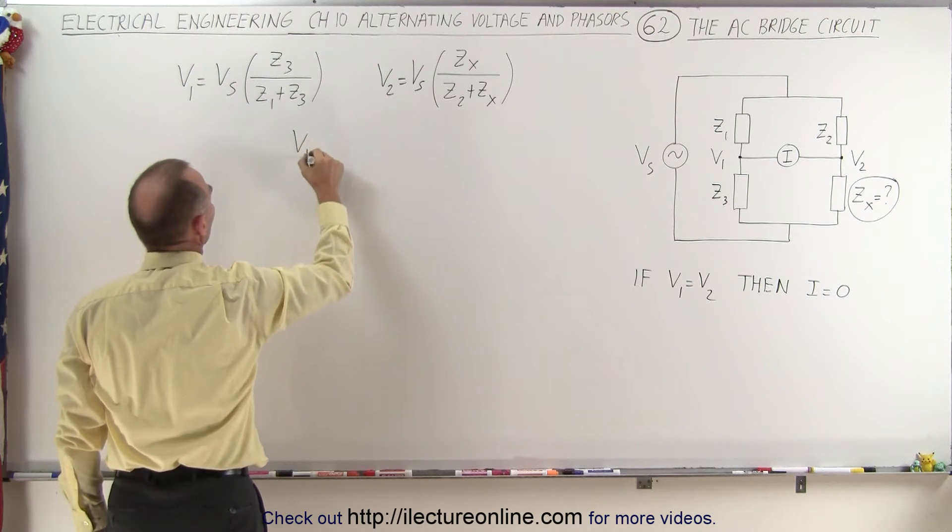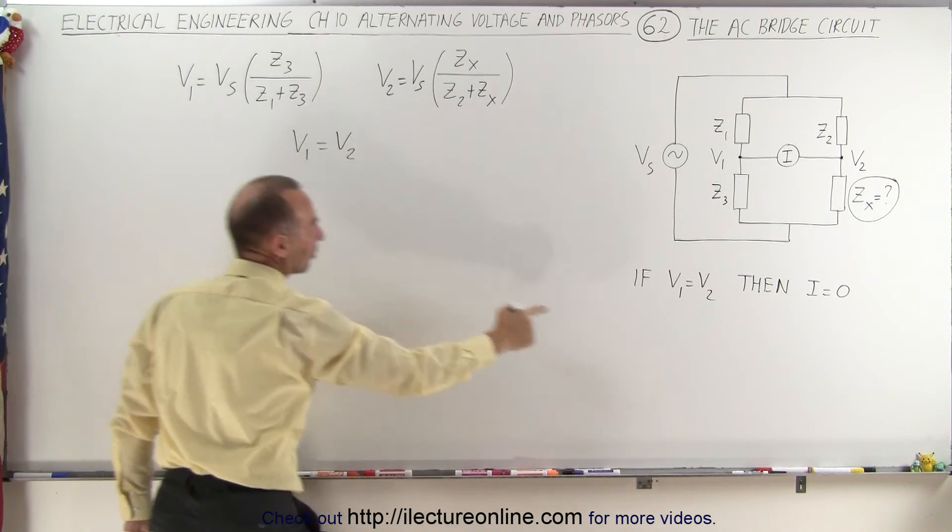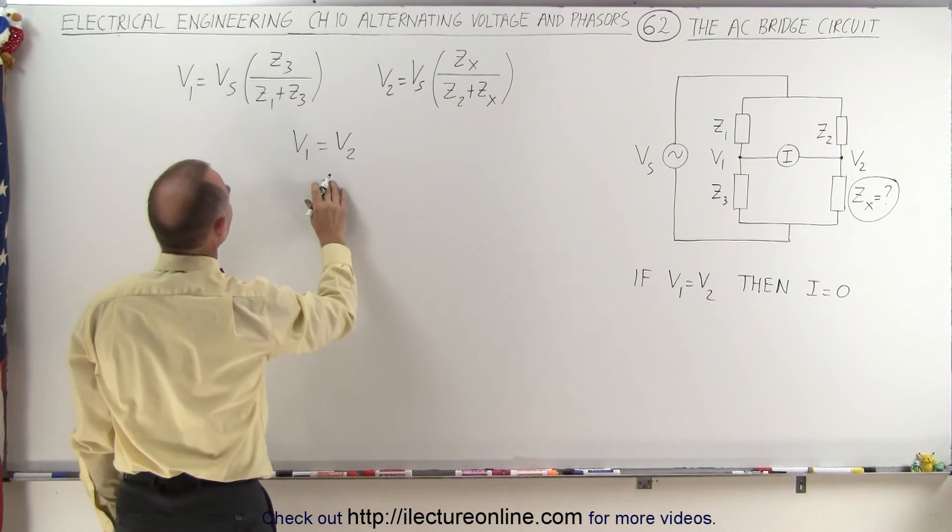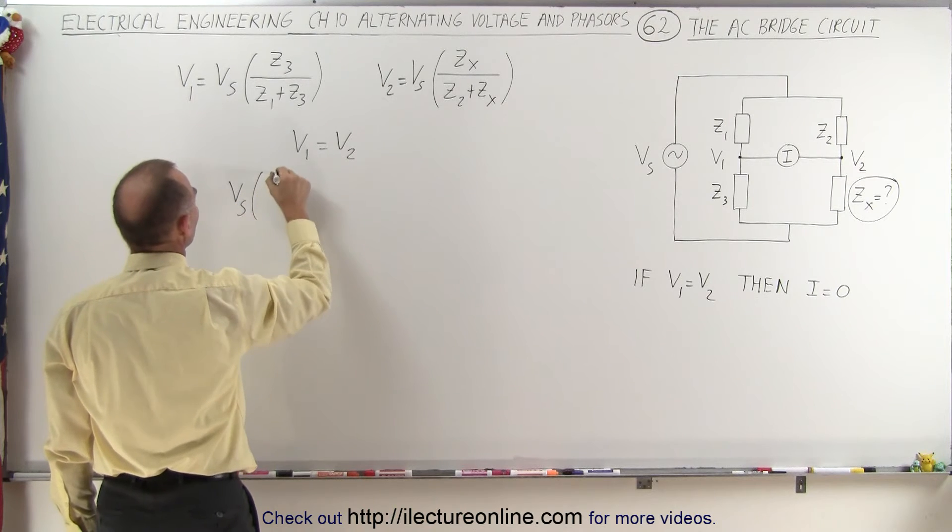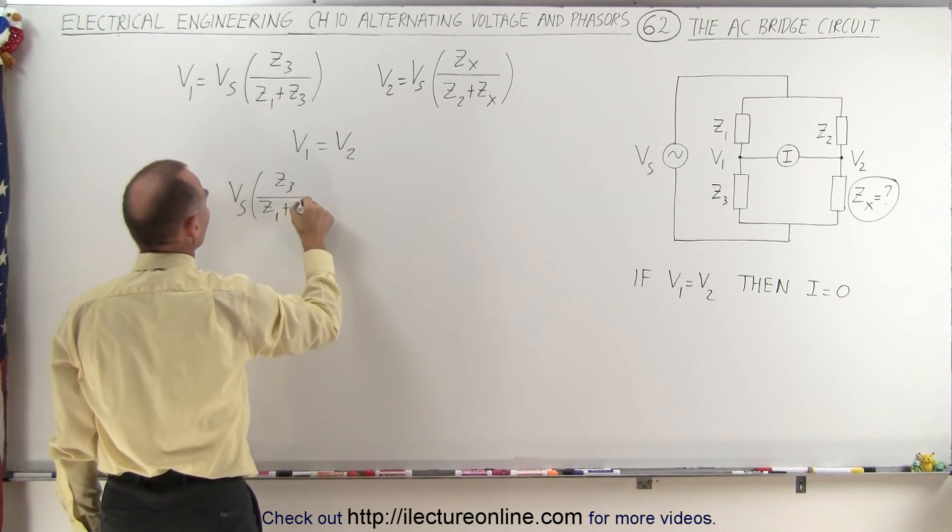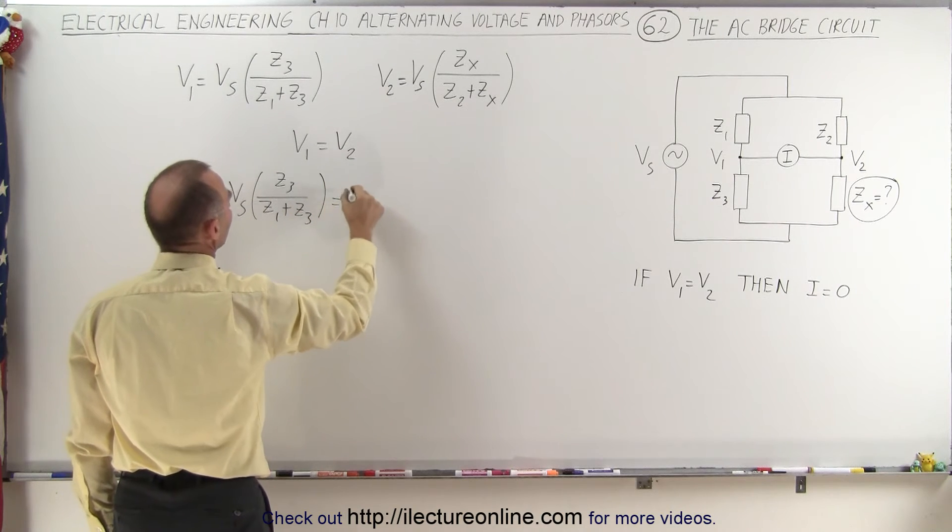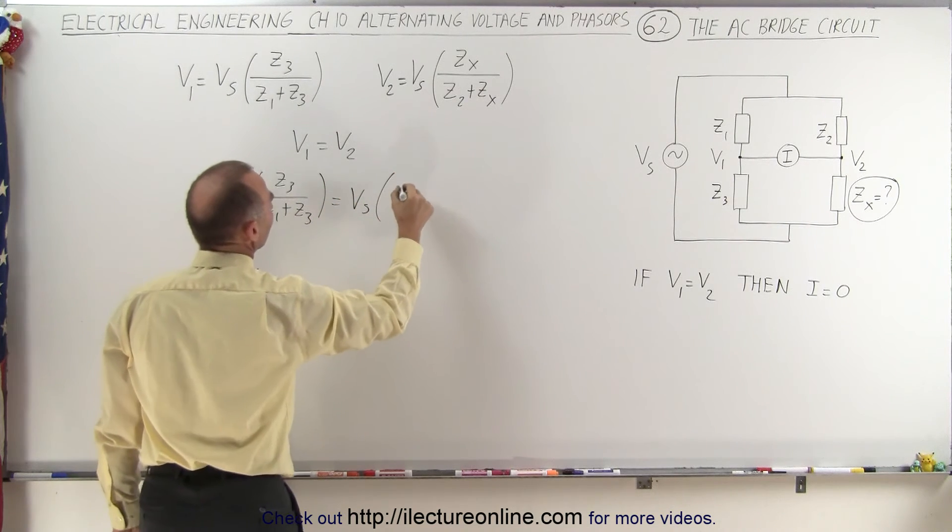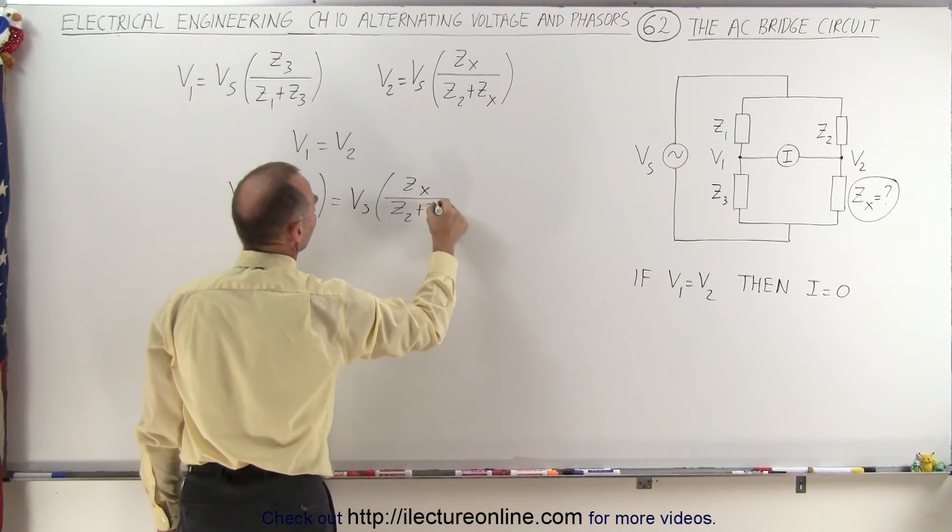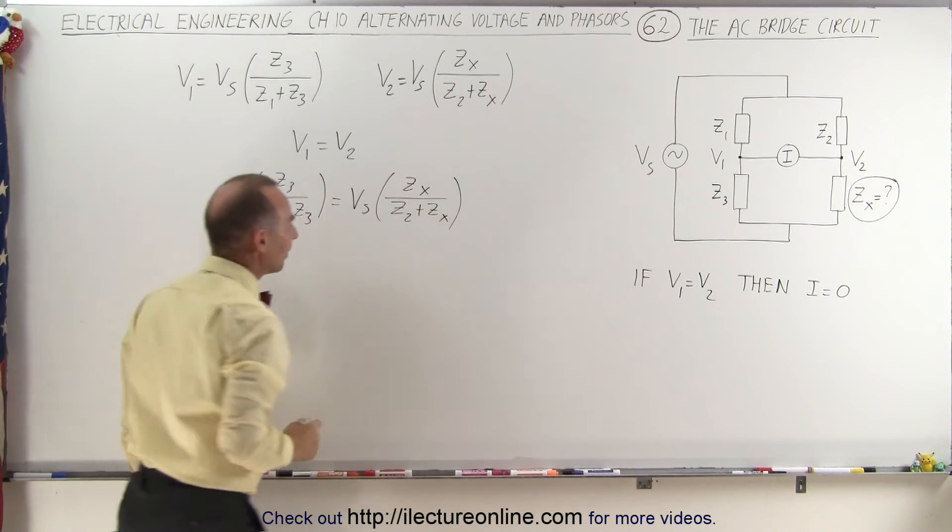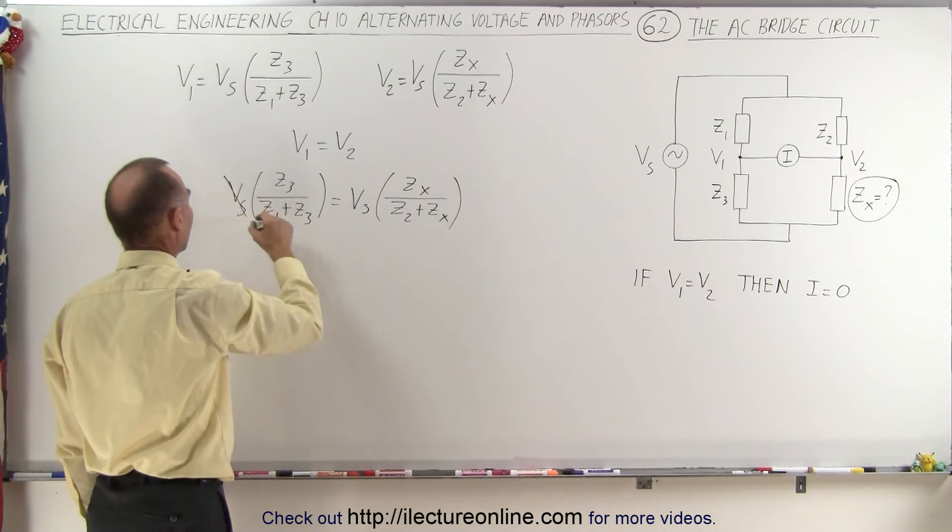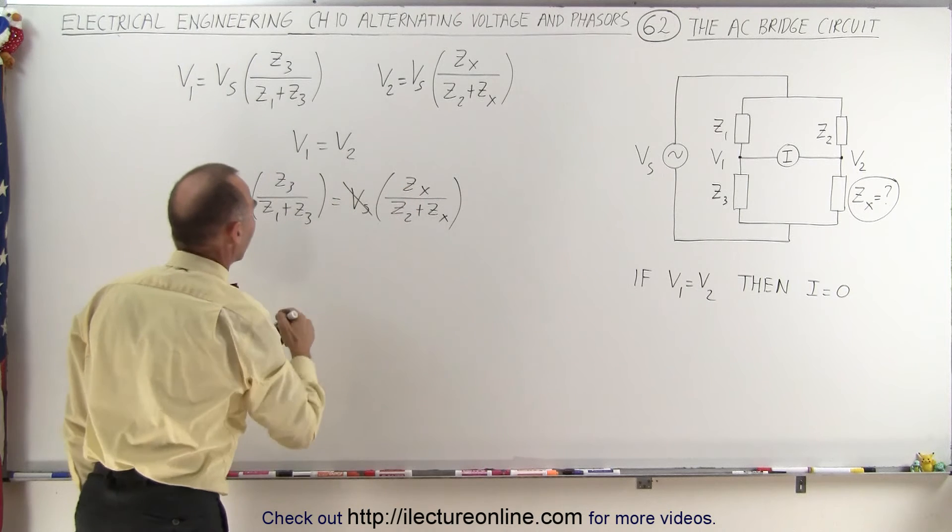When V1 equals V2 under this condition, if we adjust Z3 appropriately, we can say that Vs times Z3 divided by Z1 plus Z3 equals Vs times Zx divided by Z2 plus Zx. The source voltage cancels out on both sides. Now we cross multiply.